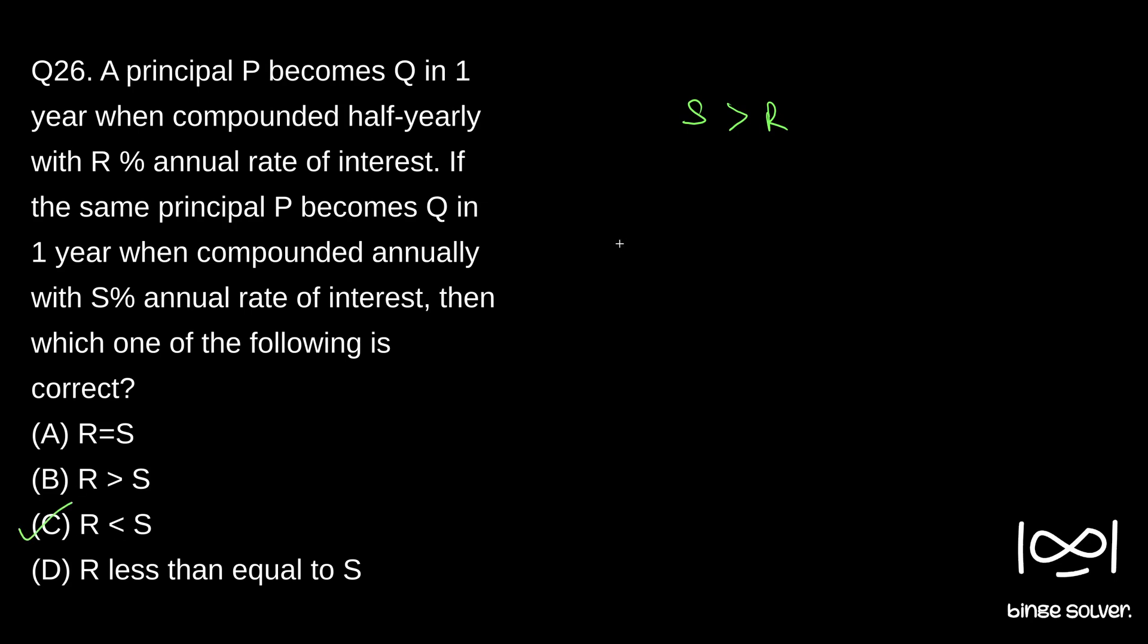So I'll just explain with an example. Say we have 100 rupees and what happens when we compound half-yearly. Say annual rate of interest is 20 percentage. So 20 percentage means half-yearly we will have 10 percentage.